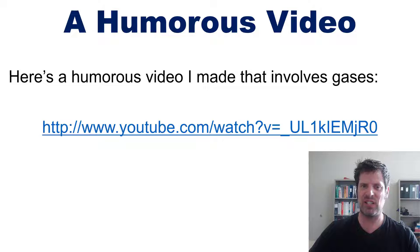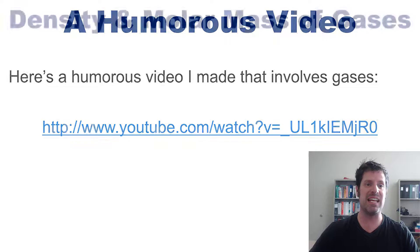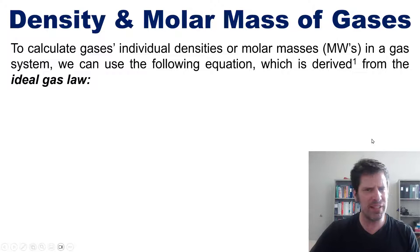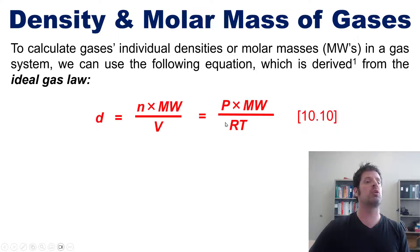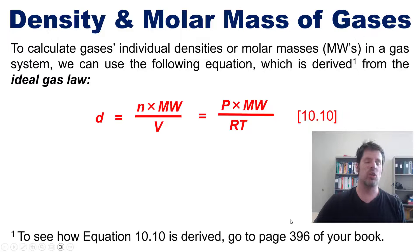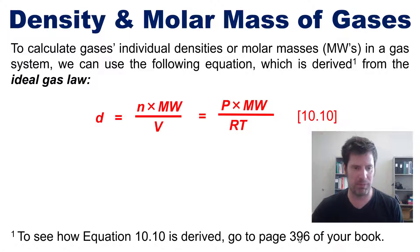With that said, let's move into today's lecture which touches on the density and molar mass of gases. To calculate gases' individual densities and molar masses, sometimes abbreviated as MW's in a gas system, we can use the following equation which is derived from the ideal gas law. If you want to see how it's derived, you can leap to page 396 of our textbook, which is referenced in the description below.